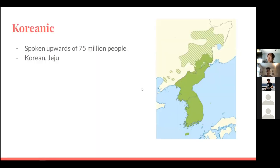We'll begin with Korean. It's spoken by upwards of 75 million people, with the main speakers being Koreanic. Jeju is another variety — some argue it's a separate language because it is not mutually intelligible with Korean. Along with that, there are a few others, like Yuchen, where there isn't universal agreement on whether they are their own dialect or their own language.